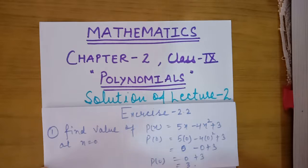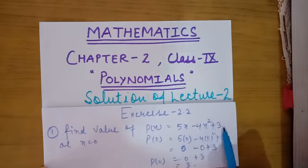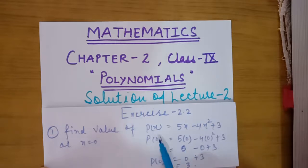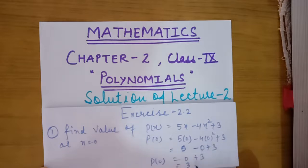From exercise 2.2, the first question is: find the value of the given polynomial at x equals 0. The given polynomial is 5x minus 4x squared plus 3. For finding the value, we replace x with 0. When we multiply 5 with 0 it becomes 0, and the square of 0 is also 0, so multiplying with 4 is also 0. We get the answer as 3 — this is the value of the polynomial at x equals 0.